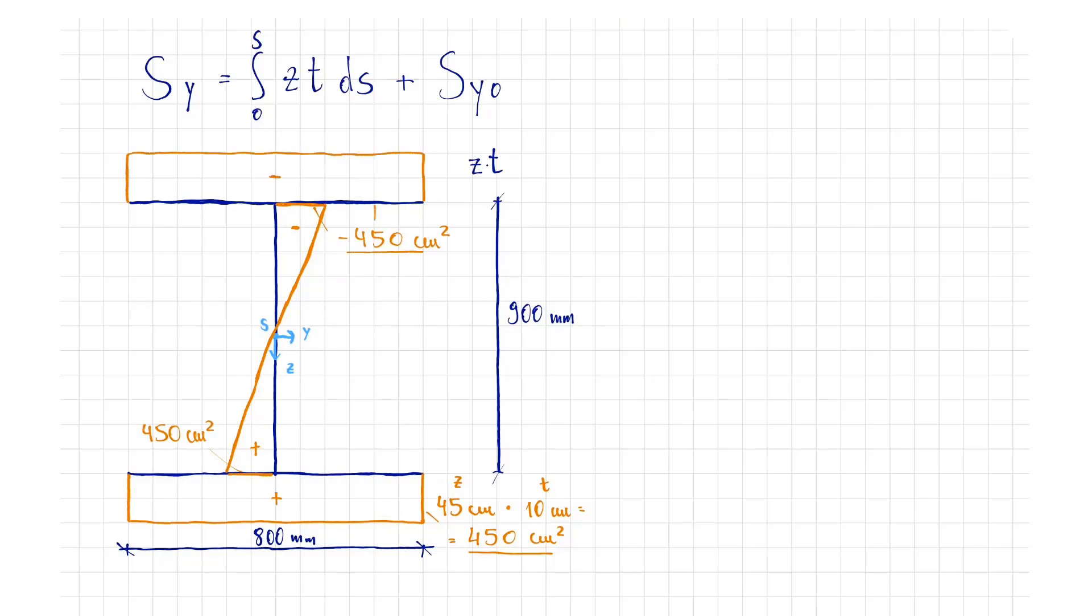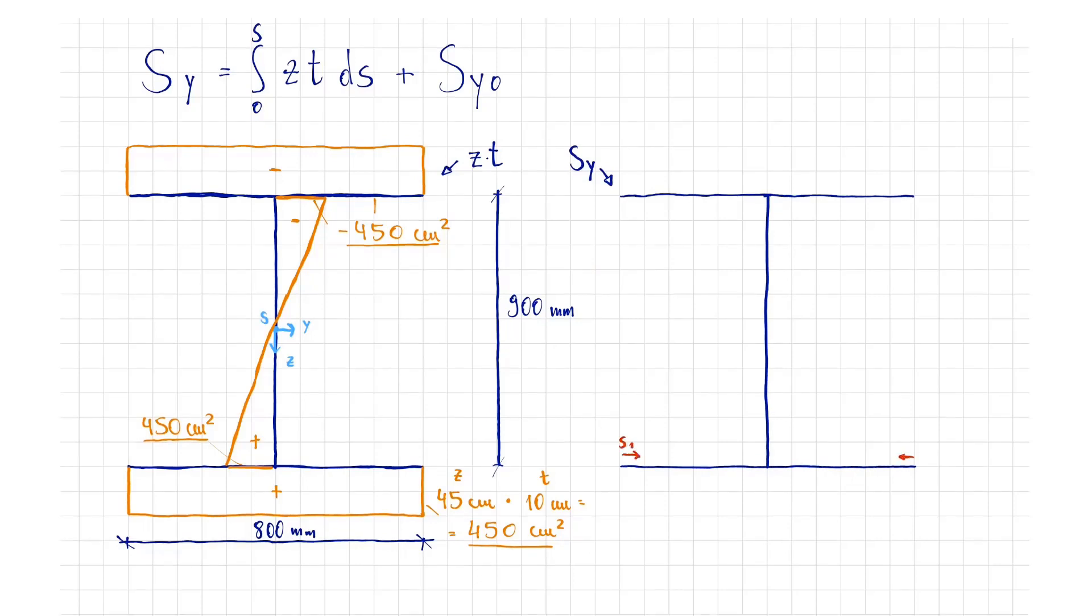Right next to it, we draw the Sy distribution. It is important to define the small coordinates S in such a way that they start from the free edge. In this way, the initial value Sy0 becomes zero.